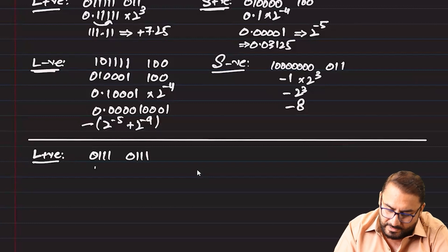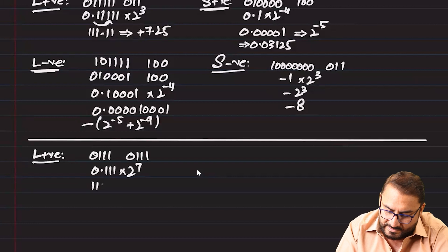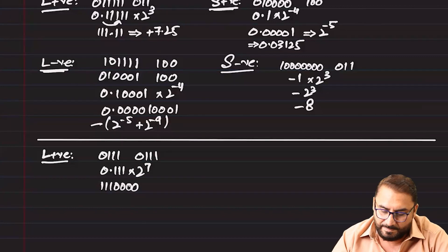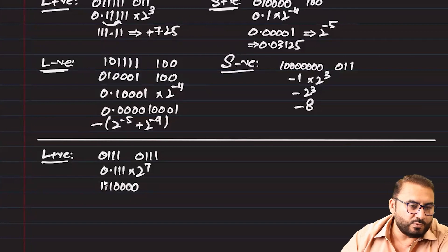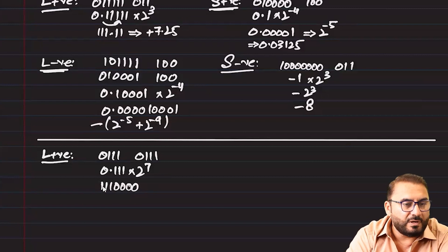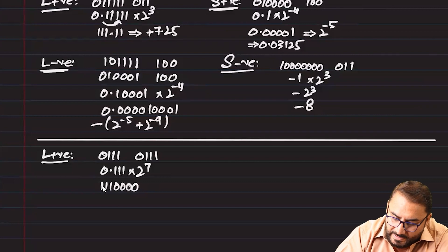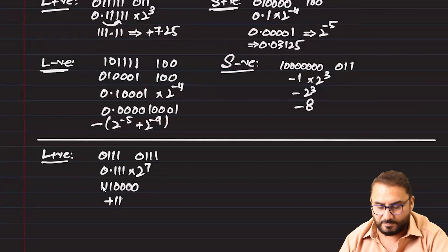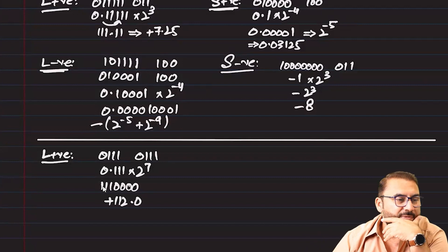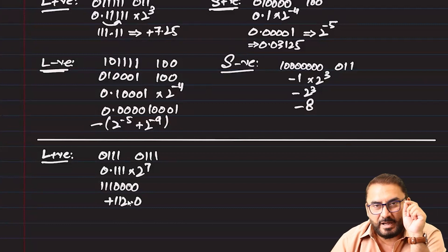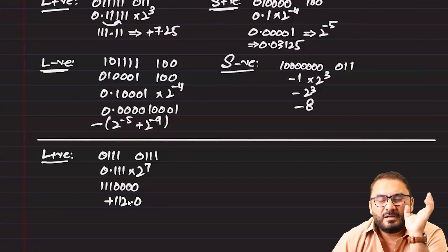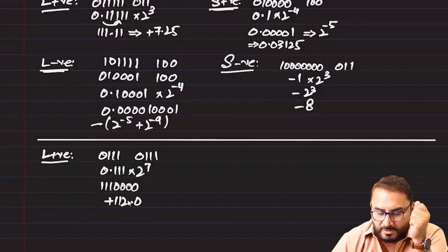For the largest positive number with 4-bit mantissa and 4-bit exponent: 0.111 × 2^7. This equals 1 + 2 + 4 + 8 + 16 + 32 + 64 = 112. Earlier with 6-bit mantissa and 3-bit exponent it was 7.25, and now it is 112. There is a phenomenal difference — for every single bit that increases in the exponent, the size grows dramatically.